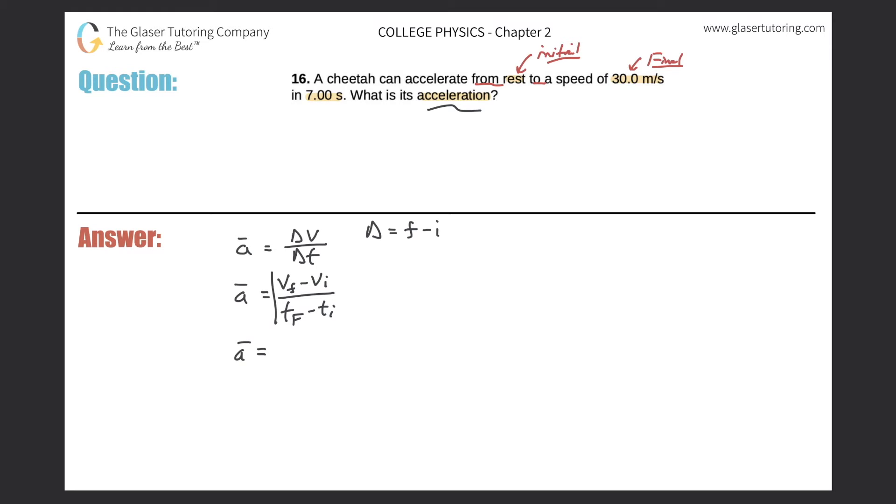Okay, so let's plug those values in. The final velocity value was 30.0 meters per second, minus the initial velocity was 0 meters per second. And that's all now divided by the time.